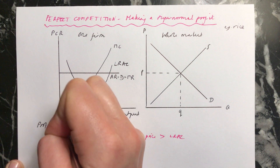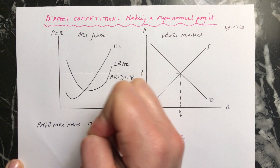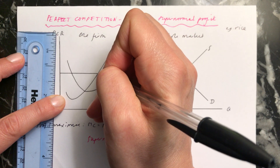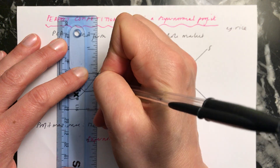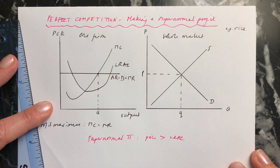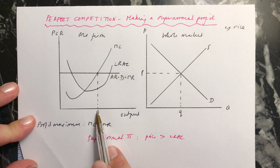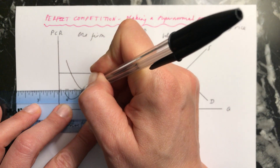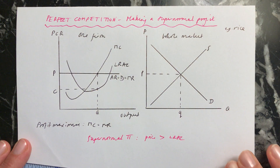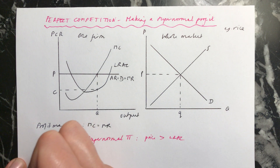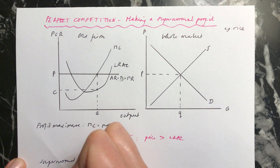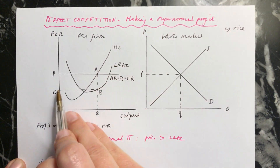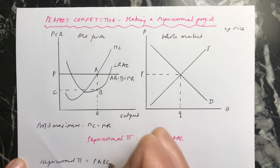So we profit maximize where marginal cost equals marginal revenue. To find out your quantity, you come down to the x-axis — that's our quantity. And to find out what your costs are, you see at this quantity where you bump into the long run average cost curve, then go across to the axis to find your costs. This is your price, and therefore our supernormal profit is equal to the area P, A, B, C — that's your supernormal profit.